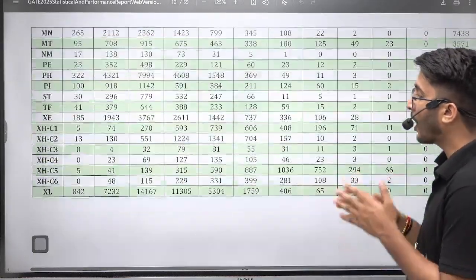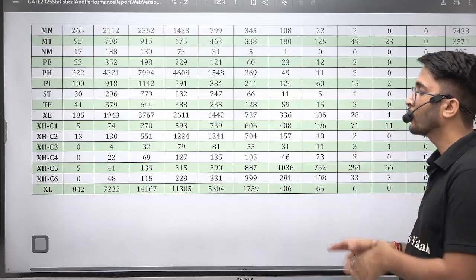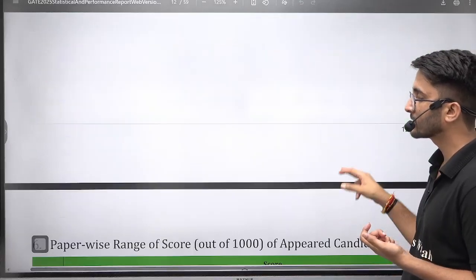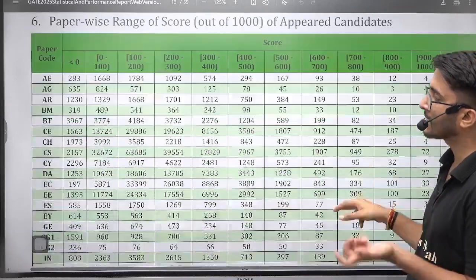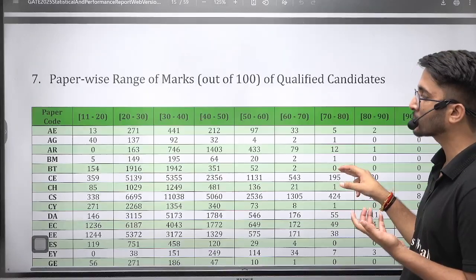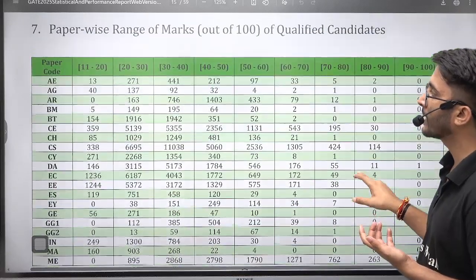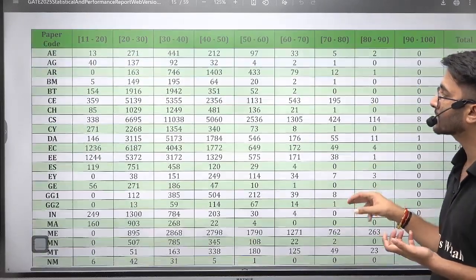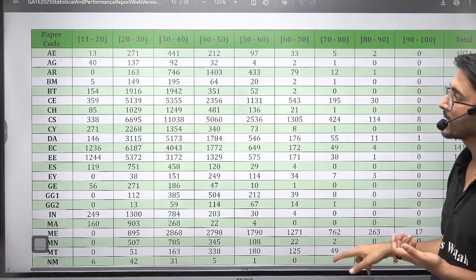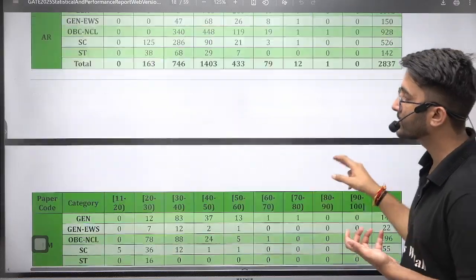You will get an idea like how many students are above your marks, so this type of calculation you can do. Similarly, score-wise also they provided, marks-wise also provided and score-wise also provided. Paper-wise range of marks is also there, how many students are getting marks in the range of 80 to 90, 70 to 80, 60 to 70.